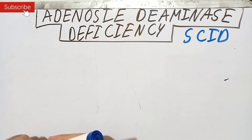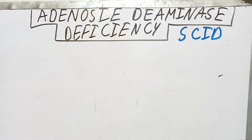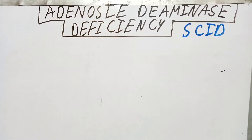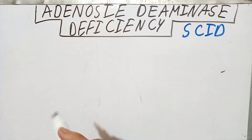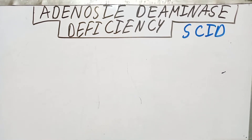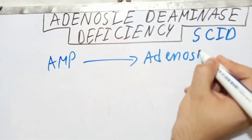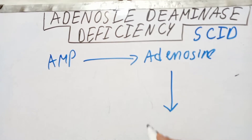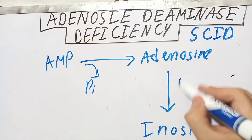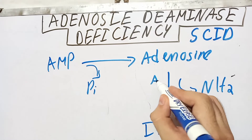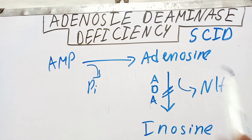Today we will talk about adenosine deaminase deficiency and how this deficiency leads to severe combined immunodeficiency syndrome. First, let's talk about the adenosine deaminase enzyme. During the degradation of AMP and GMP — the purine nucleotide degradation pathway — AMP is first converted into adenosine, and then this adenosine is converted into inosine. Here a phosphate group has been removed and an amino group has been removed, so the enzyme is called adenosine deaminase.